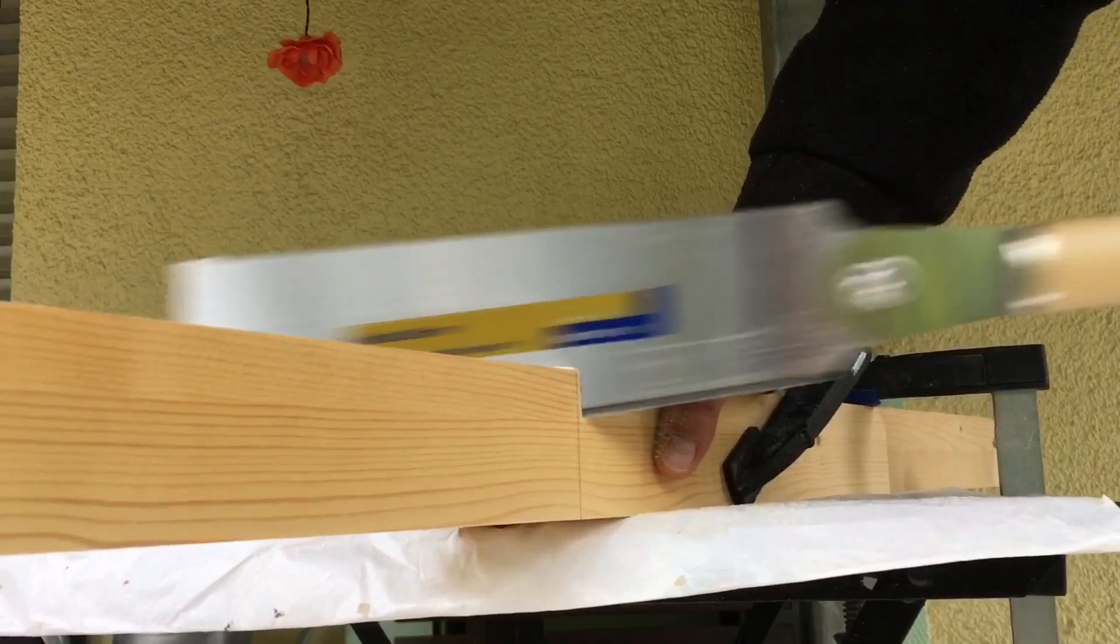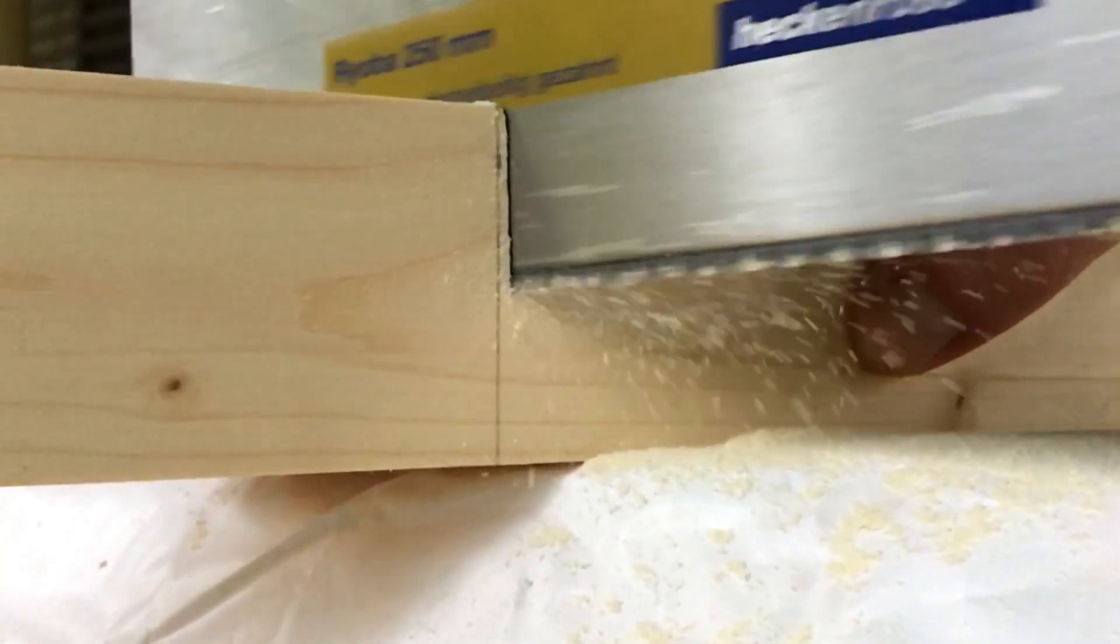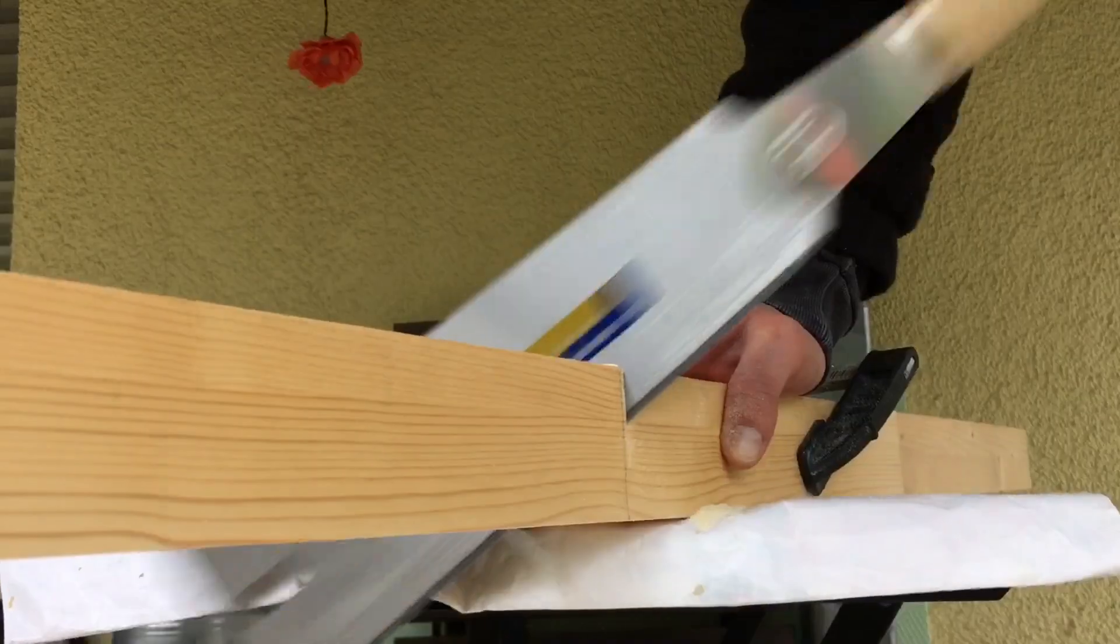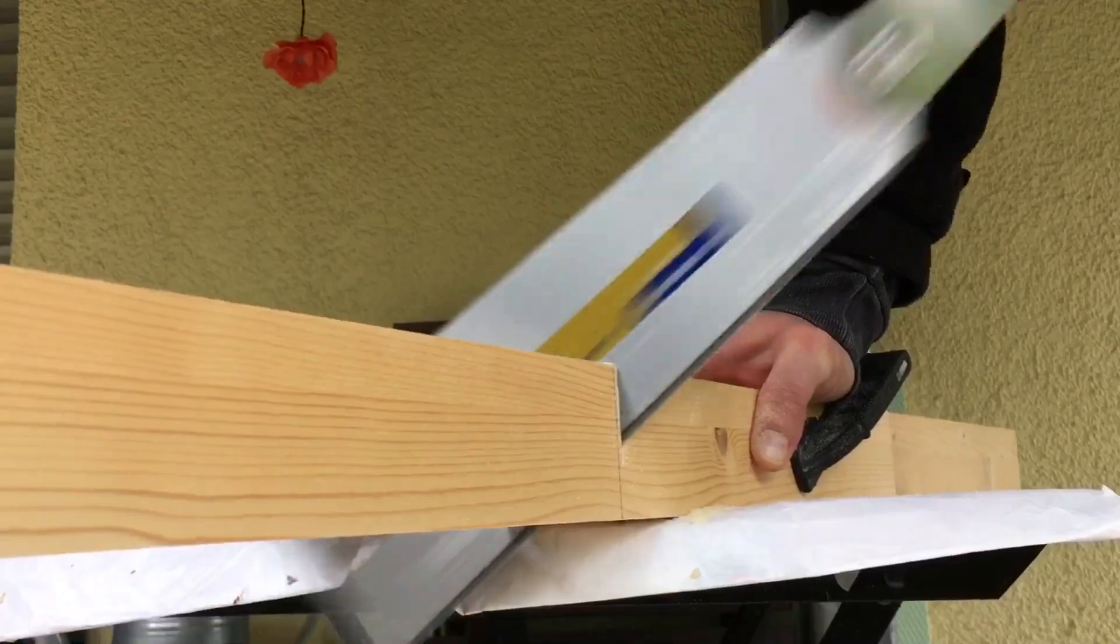A honeycomb has the shape of a hexagon, so I needed to cut six pieces and on both ends had to be the 30 degree angle.